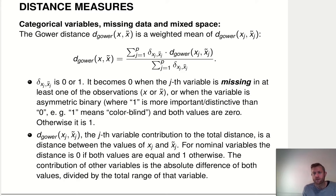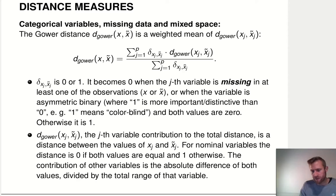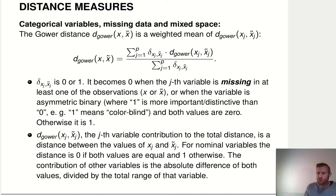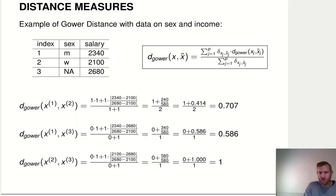The important thing is the Gower distances for the specific features. For variables where we can only say whether they are the same or distinct, the distance is zero if they're the same and one if they're not — so for something like hair color, the distance is zero if both have the same hair color and one if the hair color is different. For numerical variables, it uses the absolute difference between both values divided by the maximum possible distance in the dataset — that is, divided by the total range of that variable.